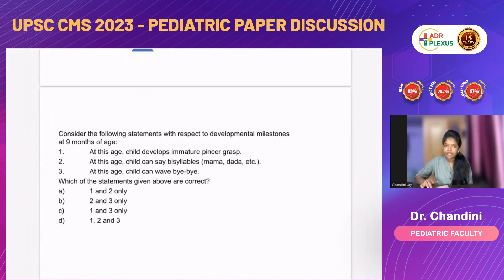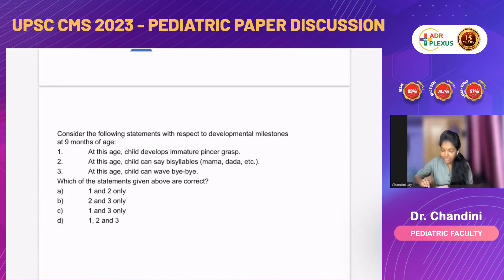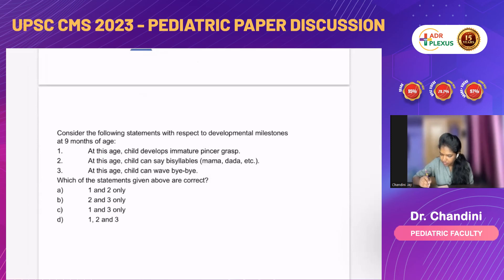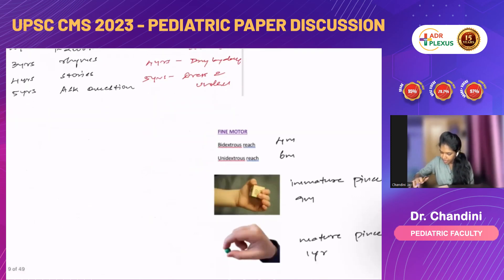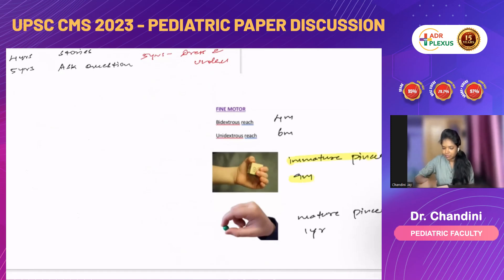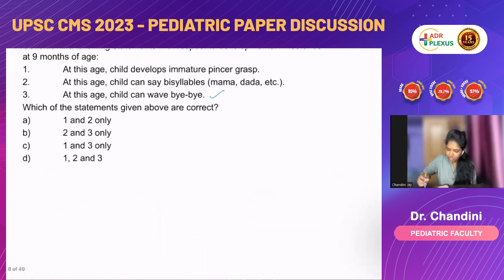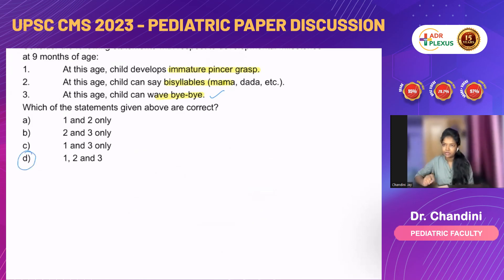Next question: consider developmental milestones at nine months of age. The child develops immature pincer grasp, can say bi-syllables like mama and dada, and can wave bye-bye. All three of these milestones are correct for nine months — immature pincer grasp in fine motor, bi-syllables in language, and waving bye-bye in social development. So all three options are right — the correct answer is option D: one, two, and three.